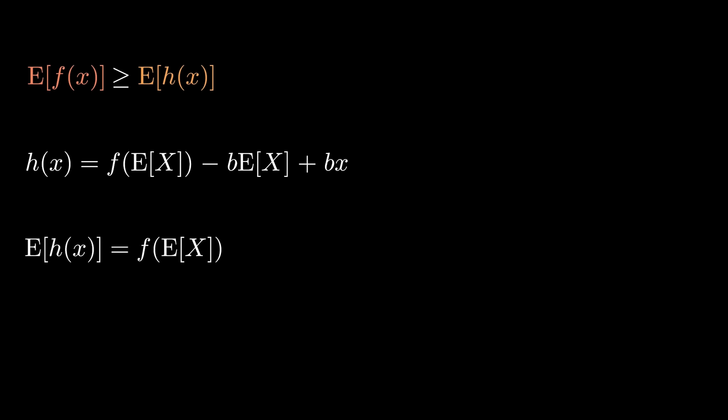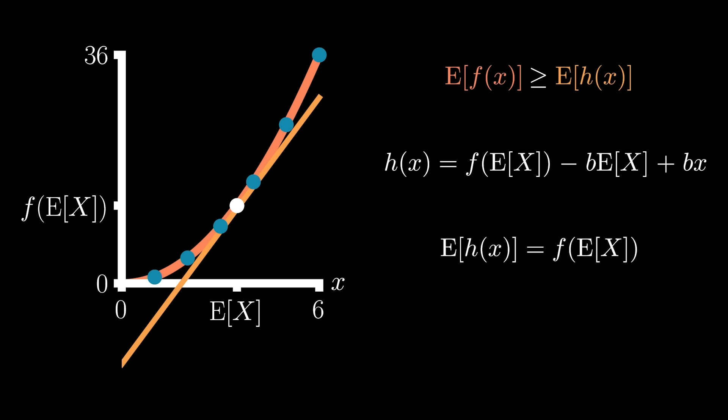And therefore, the expected value of our model output, f of x, is greater than or equal to the function of our expected input value. And this principle applies to any convex function. This is Jensen's inequality. Now I think that that's pretty neat.